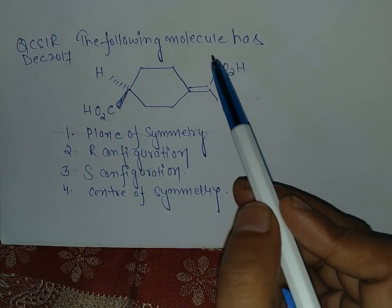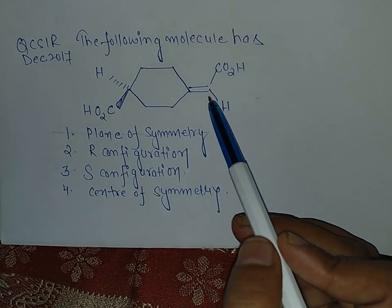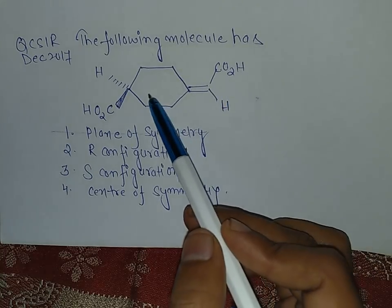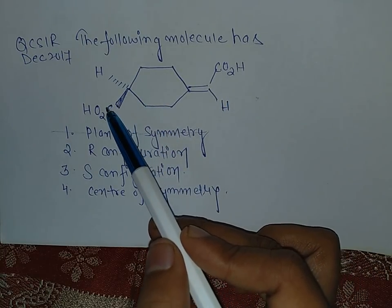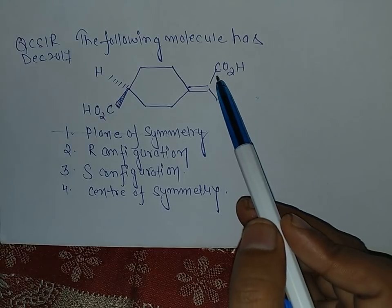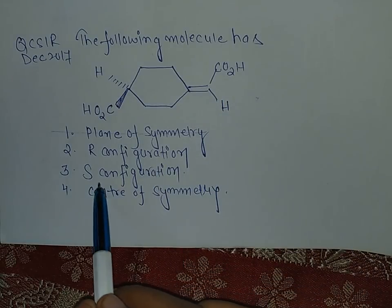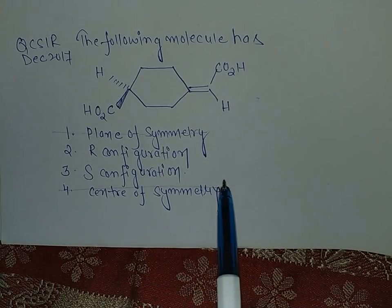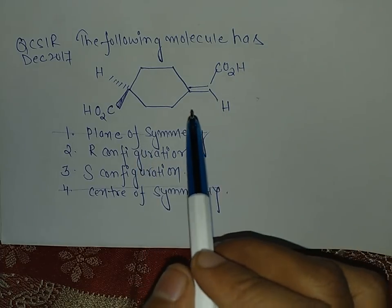Now center of symmetry. This part is in the plane because this is sp2 hybridized, and your CO2H group is above the plane, so there is no center of symmetry as such. So fourth option is wrong.